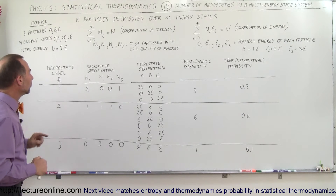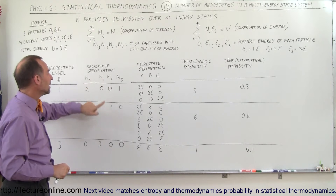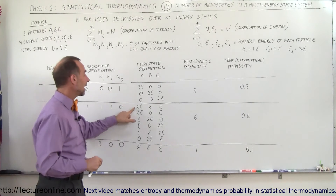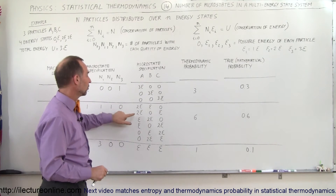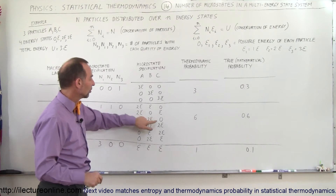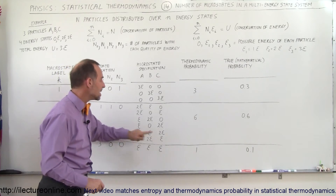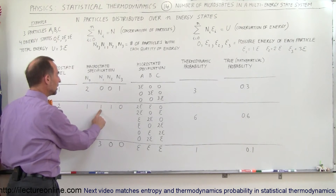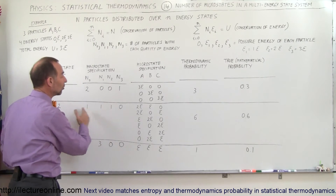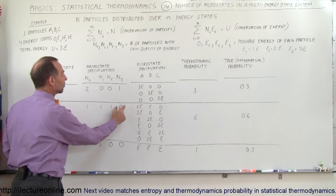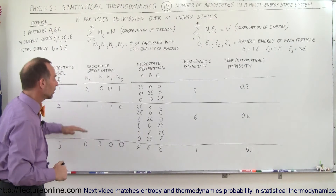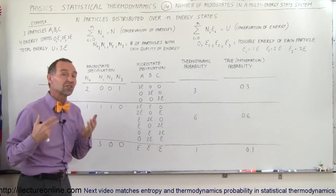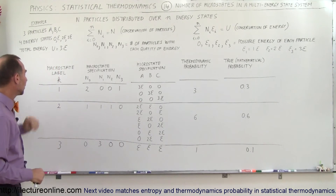The second microstate type is where one particle has no energy, one has 1E, and one has 2E. There are six different ways this can be arranged: A=2E, B=E, C=0; then A=2E, B=0, C=E; A=E, B=2E, C=0; A=E, B=0, C=2E; A=0, B=E, C=2E; and A=0, B=2E, C=E. Since the system has a total energy limit, no particle can hold 3E in this configuration. The thermodynamic probability is 6, and the mathematical probability is 0.6 — a 60% chance the system is in one of these microstates.